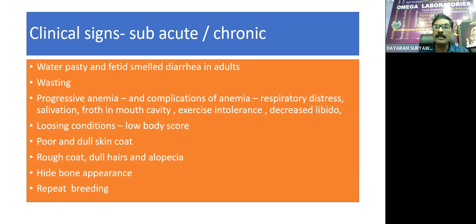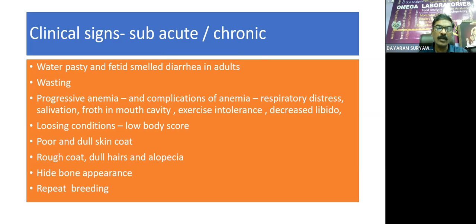Because of anemia, there is respiratory distress and salivation. There is exercise intolerance — the animal will not walk longer distances. In male animals, there is decreased libido; the animal is unable to mount or conceive females. The animals lose condition, have a low body score, dull skin coat, poor health, rough hair coat, dull hairs, and alopecia. Heightened bone appearance and repeat breeding are common findings in subacute or chronic type of coccidiosis.